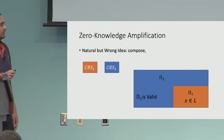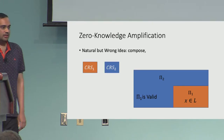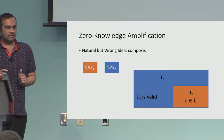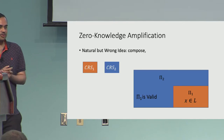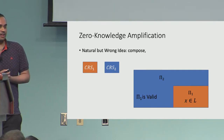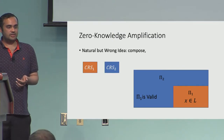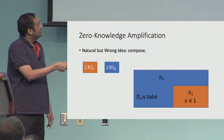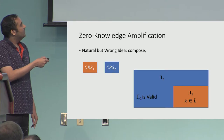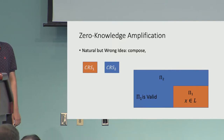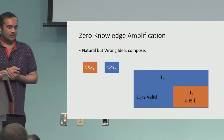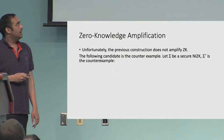Let's now focus on zero knowledge amplification — this is new to our work. The first idea that comes to mind, which I will show is wrong, is to just compose one proof with another. Have the CRS be two independently sampled CRSs. Prove X ∈ L using CRS1 to get proof π1, then use CRS2 to prove that π1 is valid, outputting π2. You would expect this to give something like δZ squared — but this intuition is completely flawed.